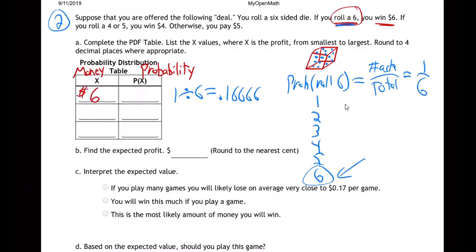We're supposed to round it to four decimal places, so I put my line after four. Remember the rounding? The six means we round that up. So 0.1667.